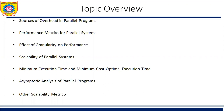In the last video, we have seen sources of overhead in parallel programs. Basically, interprocess communication, that is interprocess interaction, idling, and excess computation are the three main sources of overhead in parallel programs. Any non-trivial parallel program requires its processing elements to interact and communicate data — for example, intermediate results. The time spent in communicating data between processing elements is usually the most significant source of parallel processing overhead.